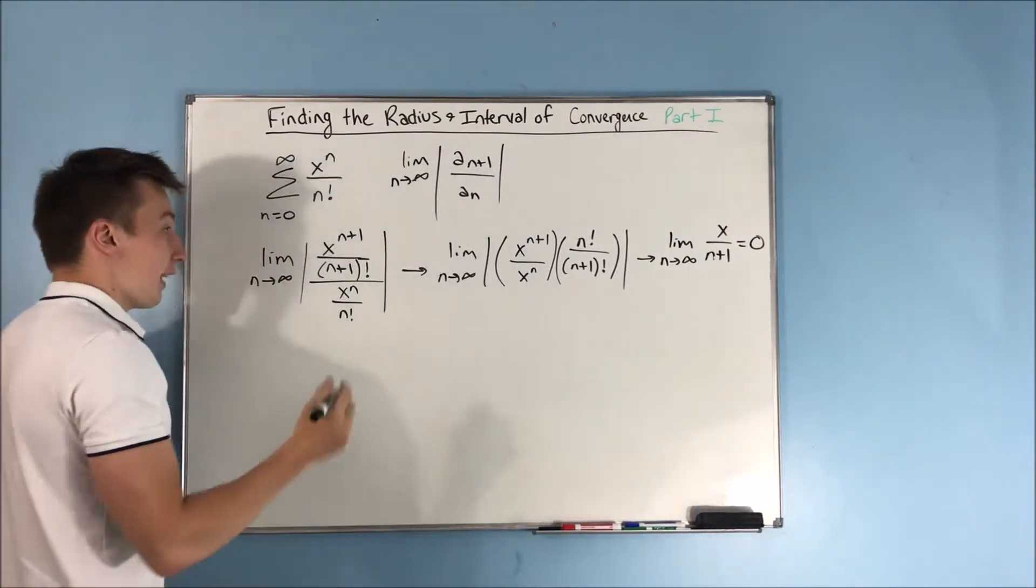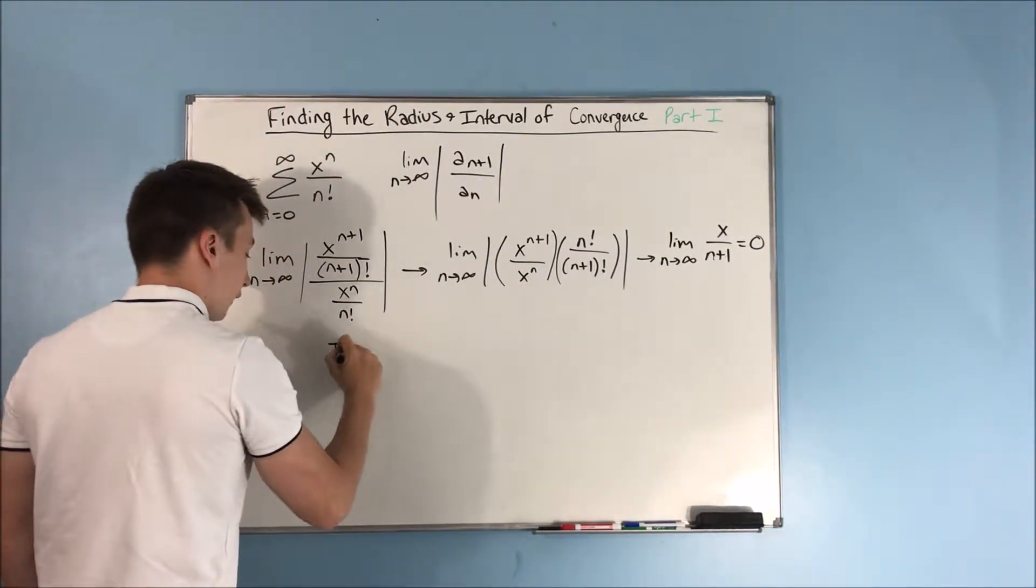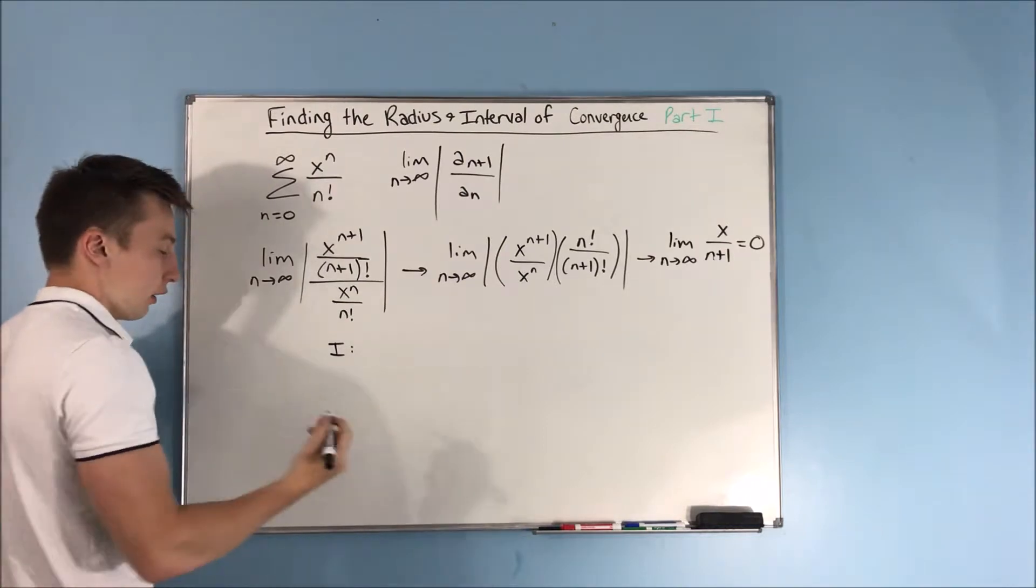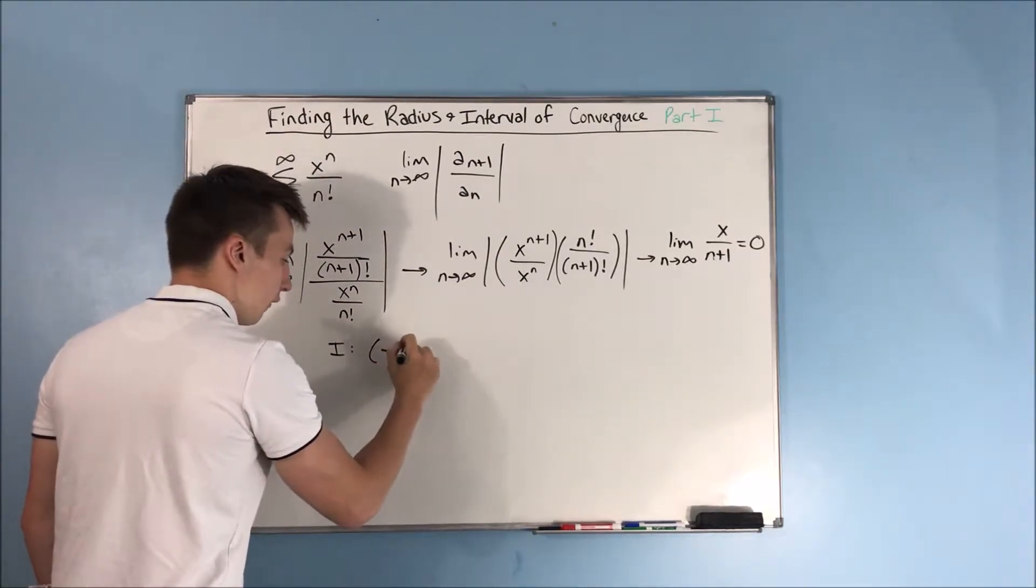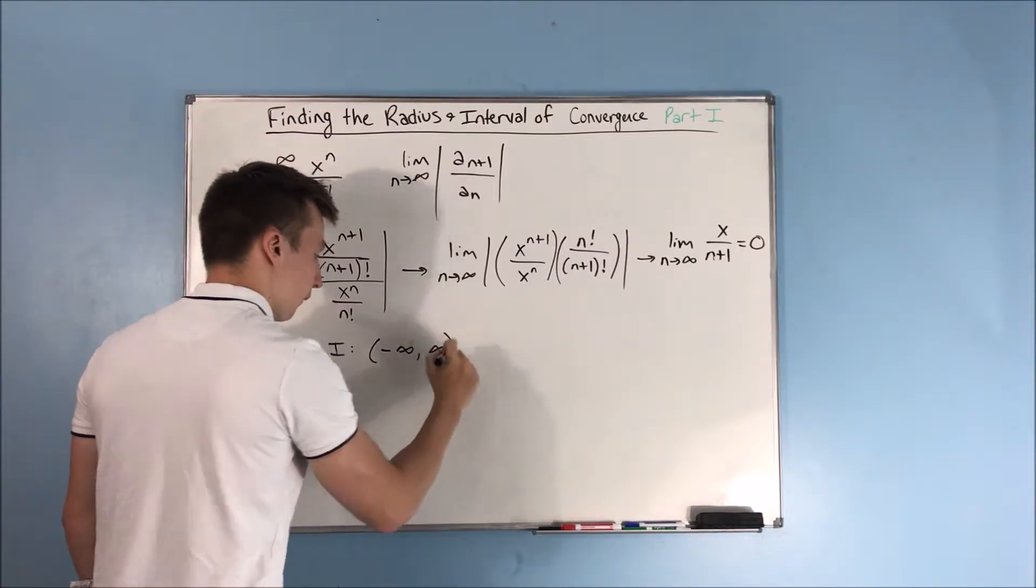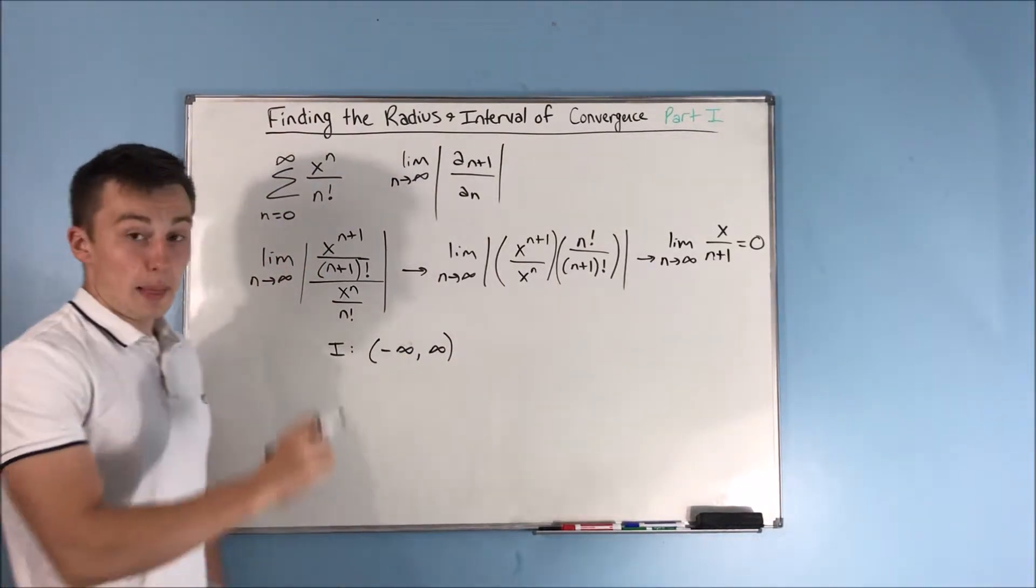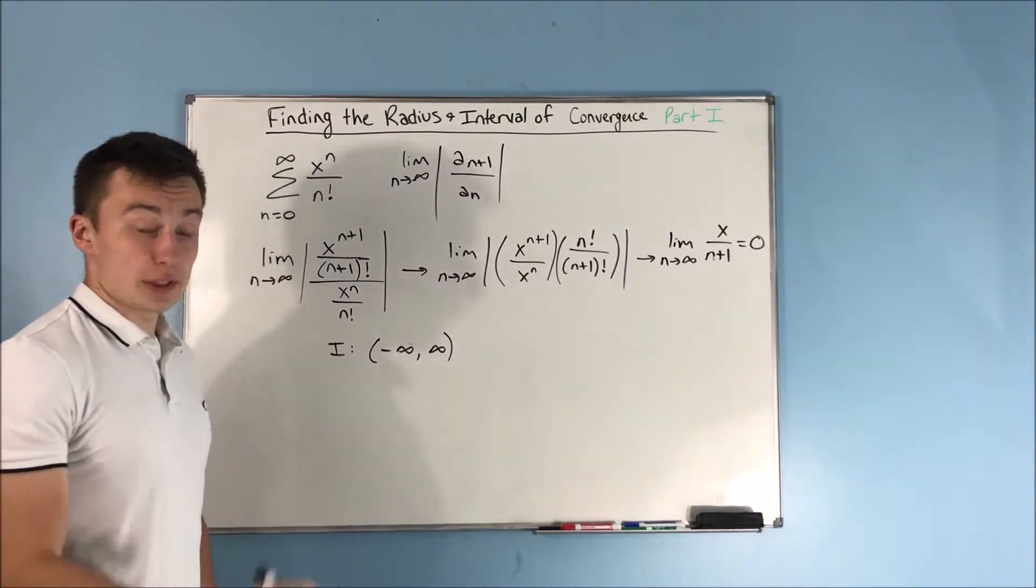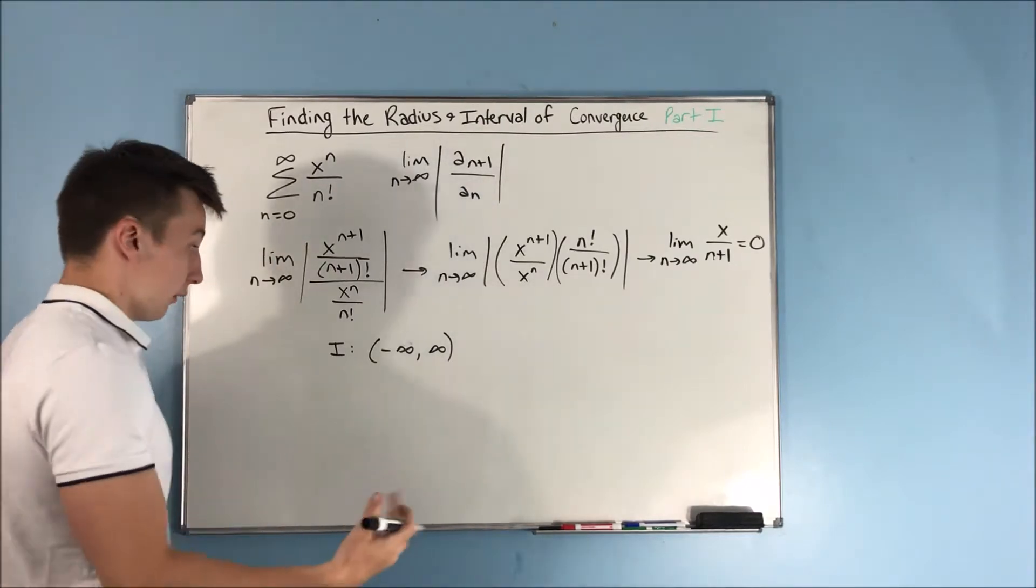So you'll get 0, 0 is less than 1, which means that the interval of convergence is negative infinity to infinity. It's always going to be convergent, doesn't matter what x you put in, it's going to be convergent.